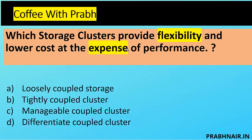Next coffee shot: Which storage cluster provides flexibility and lower cost at the expense of performance? Storage clusters are used to store data using a group of storage systems to improve read and write performance. There are two types: loosely coupled storage and tightly coupled storage. We eliminate the other two options as they are not types of coupled storage. Loosely coupled storage means different vendors' storage can be used together to support the customer — we don't need to depend on one vendor.